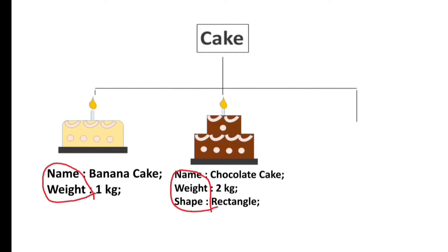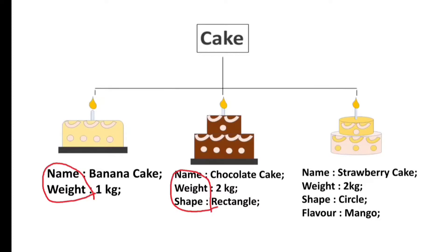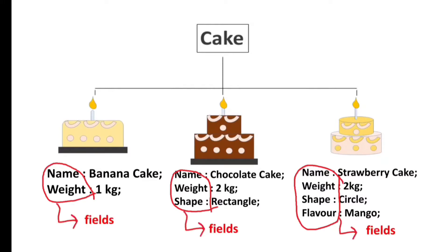A second customer comes in and orders a chocolate cake of 2 kg with a rectangle shape. Here, cake has three fields: name, weight, and shape. A third customer orders a circle-shaped strawberry cake of 2 kg with mango flavor — so cake now has four fields: name, weight, shape, and flavor. All are cakes, but each has different fields and therefore a different form. Similarly, in Java we can create an object in a different form, and this is possible only because of constructor overloading.